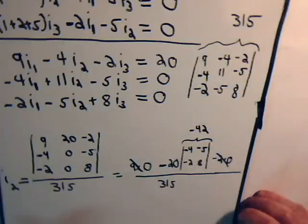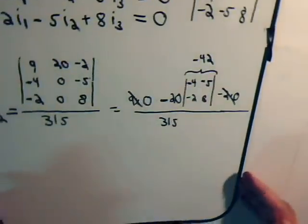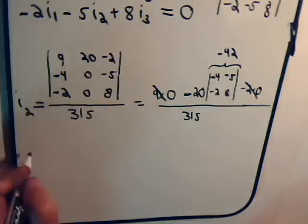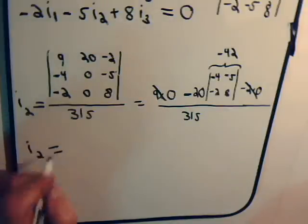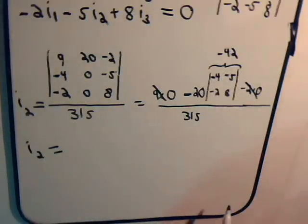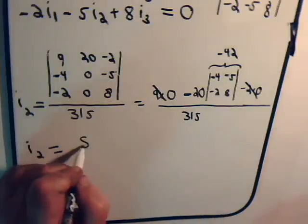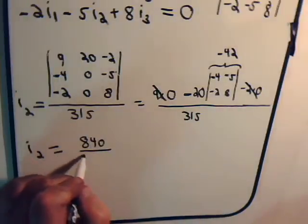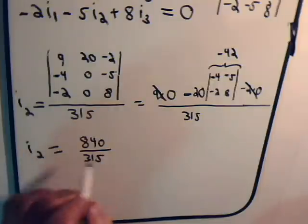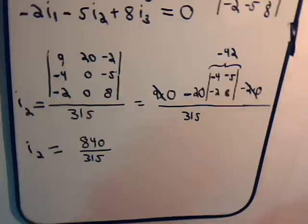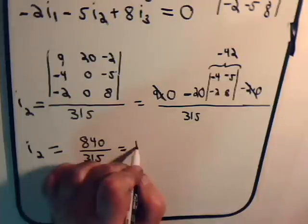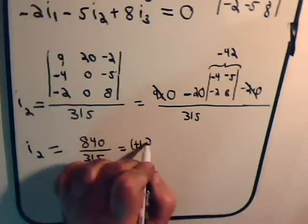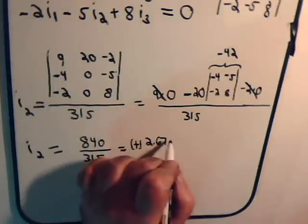So we have I2. I2 equals minus 42 times minus 20. That will be plus 84 with a 0, 840 divided by 315. Two minuses makes this a plus.